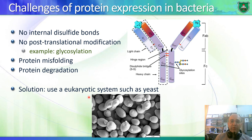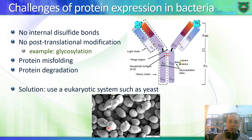As a solution, we can express proteins in a eukaryotic system such as yeast. Yeast are single-cell eukaryotes with a nuclear membrane, many proteins similar to human proteins, and they can modify proteins by glycosylation and fold proteins better than bacteria.